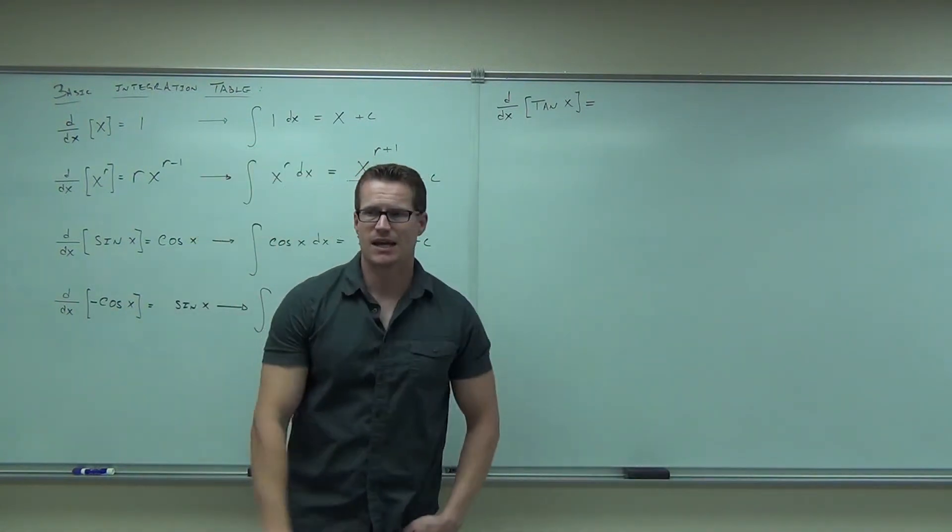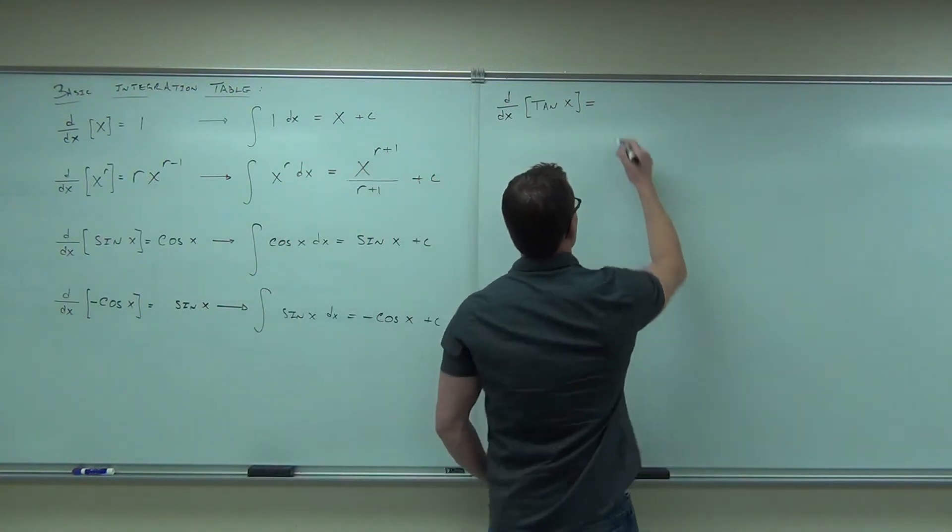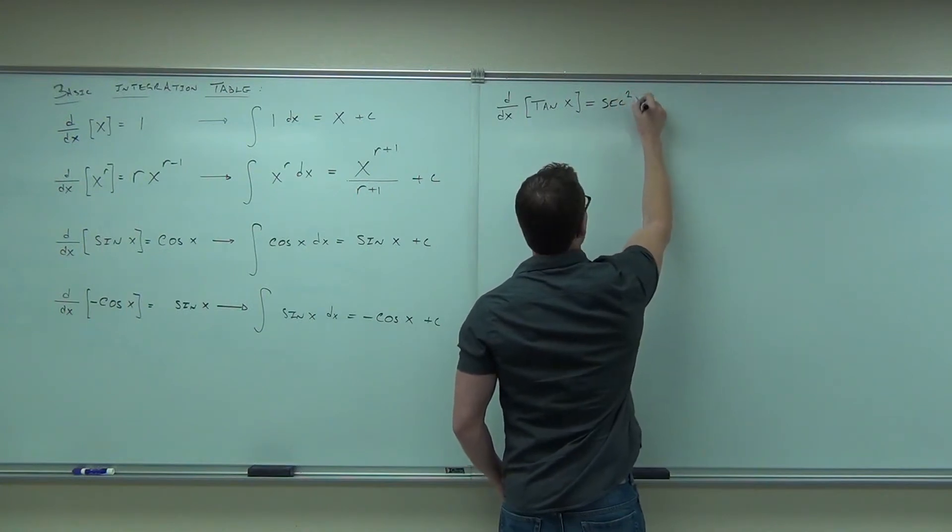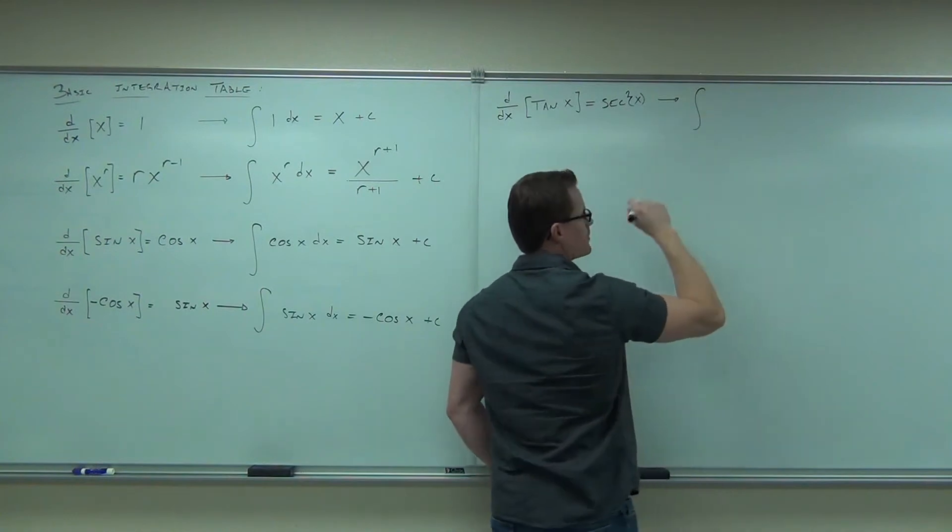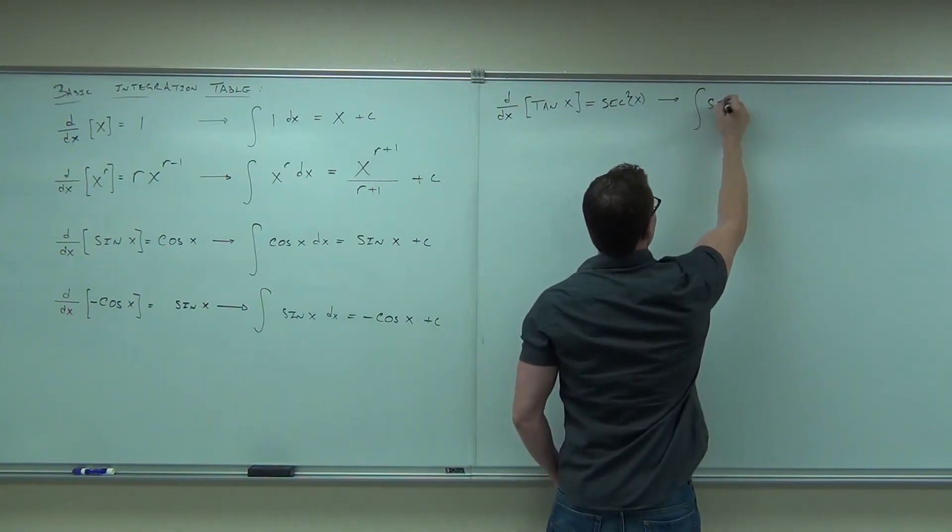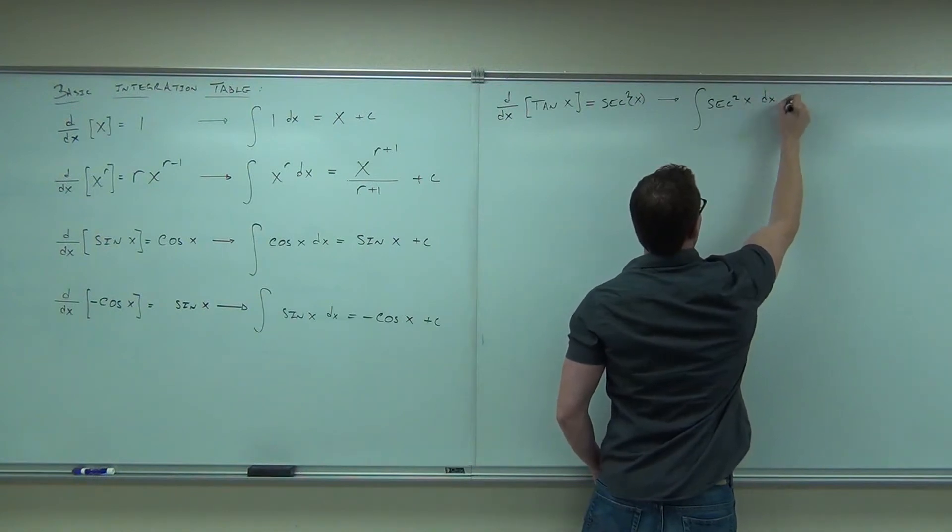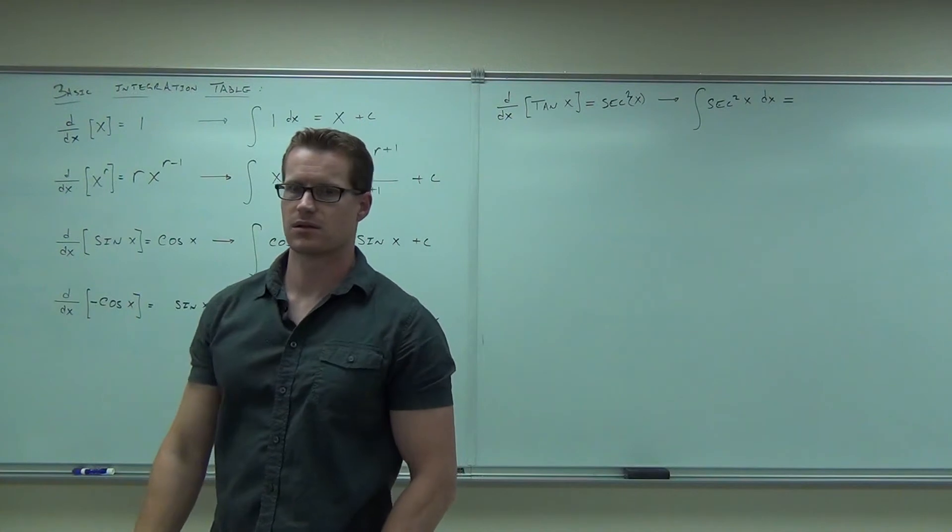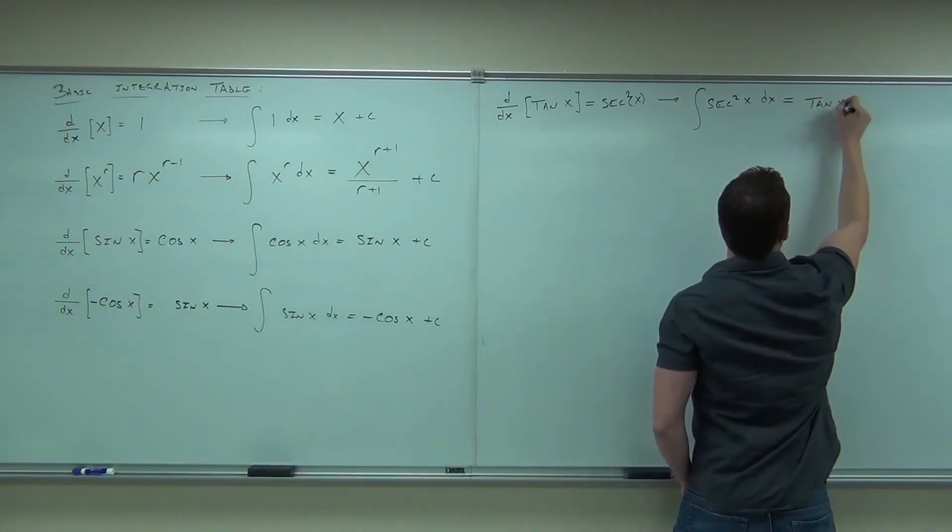Okay, derivative of tan x. What's the derivative of tan x? Secant squared x. Okay, this should be pretty painless. Now, this one's pretty easy. That means what's the integral of secant squared x? Tan x. I like the plus c. I heard it.